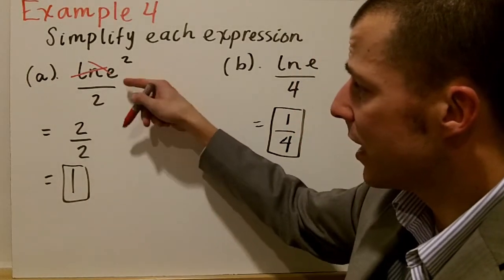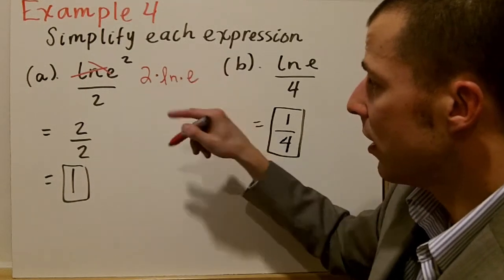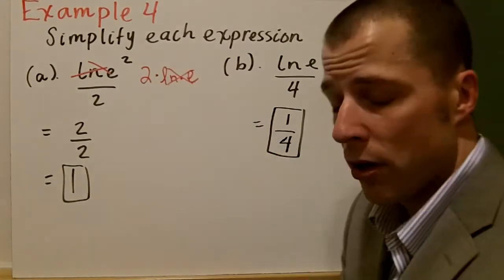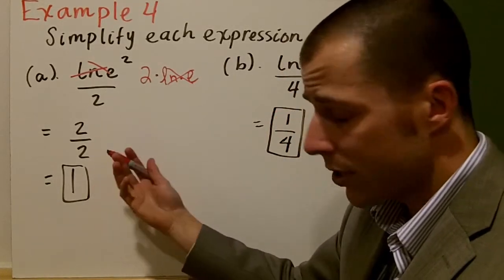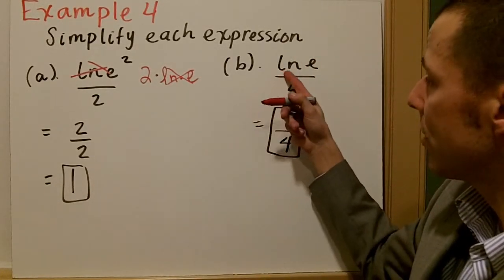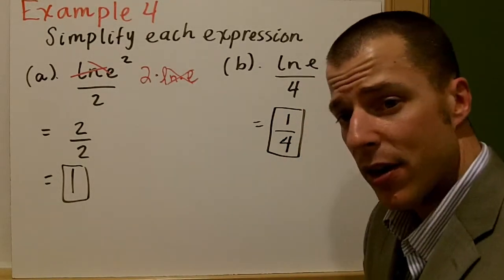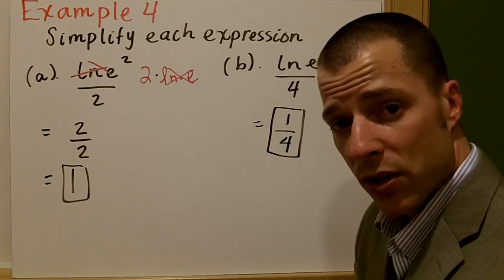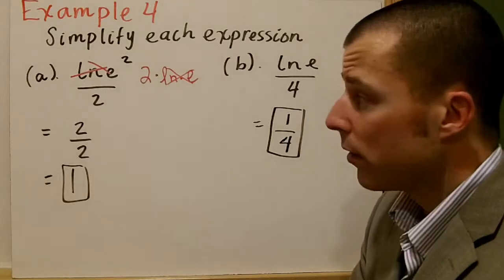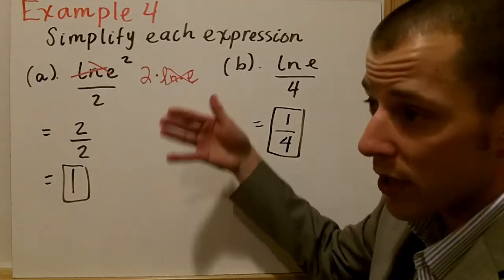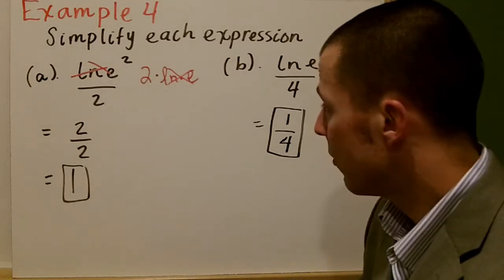And the idea here is that if we simplify, you would have 2 times the natural log times e. And then they would simplify one another. That's why we have the 2 over 2, and that's just 1. Again, the natural log of e, that's just 1 over 4. Not much to simplify there. I just wanted to show you what that looks like when you take the natural log of e, or you take e and you raise it to the power of ln. Those cancel each other out as well.